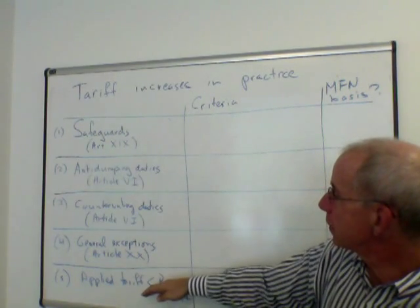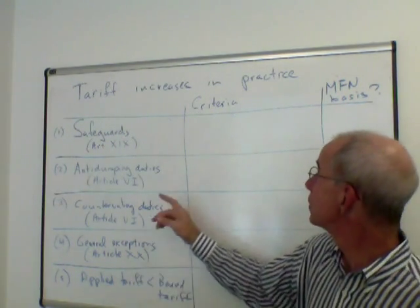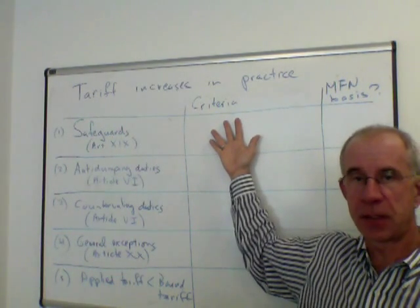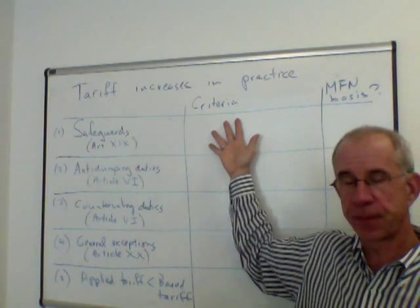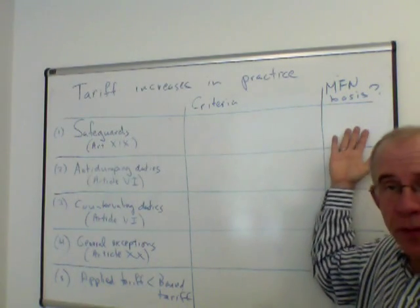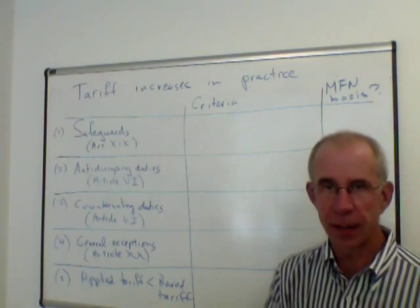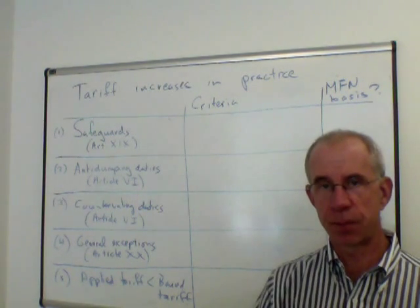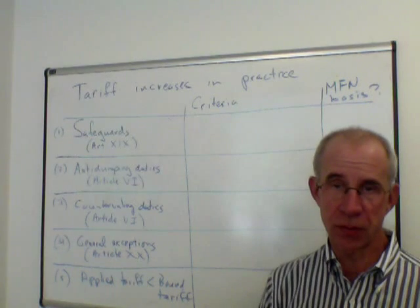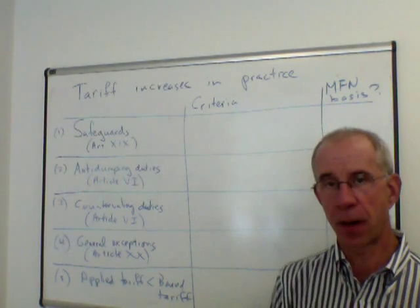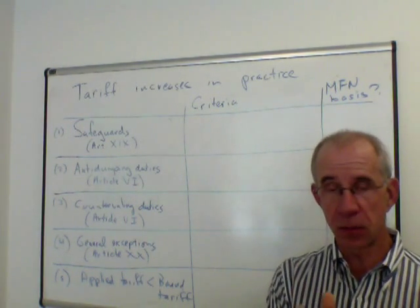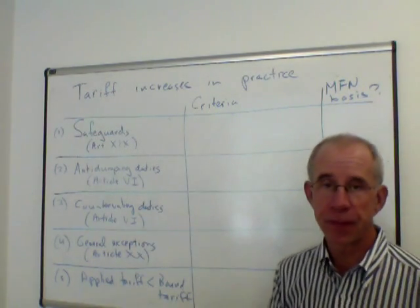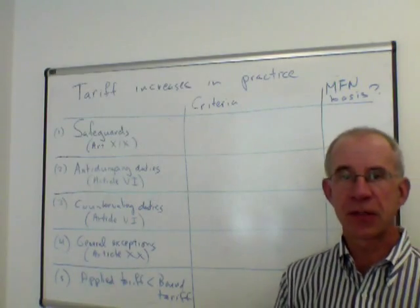We have the different provisions. I'm going to talk about the criteria where the WTO allows these to be imposed, and also whether or not the tariffs have to be imposed on an MFN basis — that is to say, tariffs that have to be increased on all sources of the imported products, or whether they can be targeted to particular countries. The first one listed here is so-called safeguard.